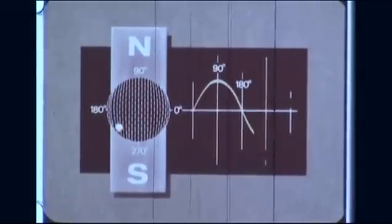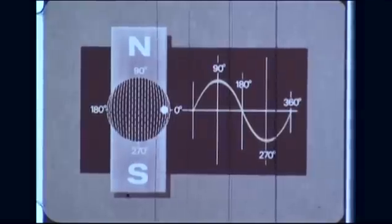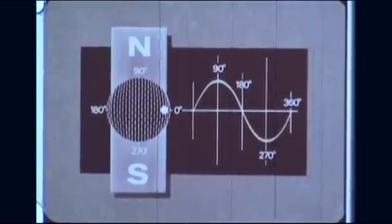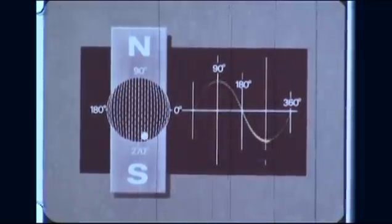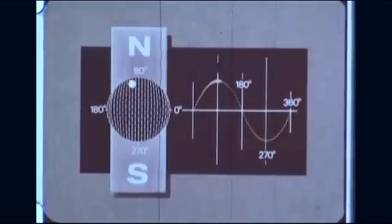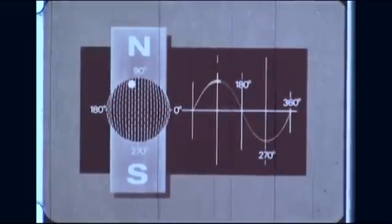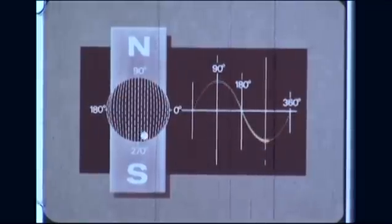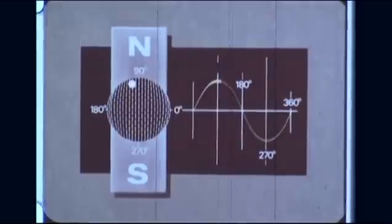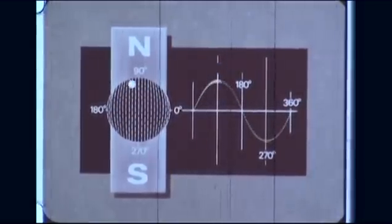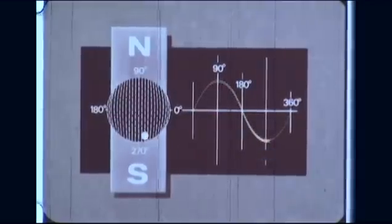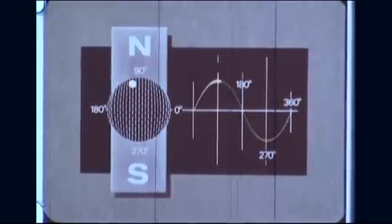The conductor's rotation of 360 mechanical degrees produces a voltage sine wave of 360 electrical degrees. The magnitude of the voltage generated is a function of the number of lines of force the coil passes through. As it passes the 90-degree and 270-degree positions, the coil cuts through the most lines of force per unit of time, and the maximum values of the voltage sine wave are produced. As the coil passes through the zero and 180-degree positions, it moves parallel to the lines of force and no voltage is induced — these are the zero points of the sine wave.